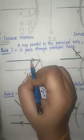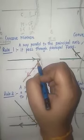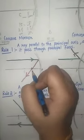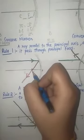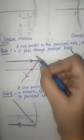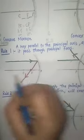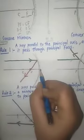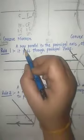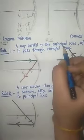Now, for drawing the ray diagram, I have used two different colors. The green color shows the incident ray and the red color shows the reflected ray. So first, draw a concave mirror with the principal axis.